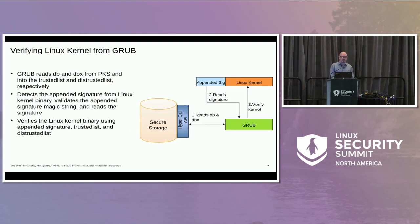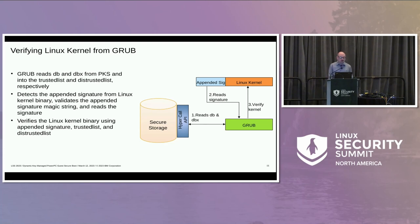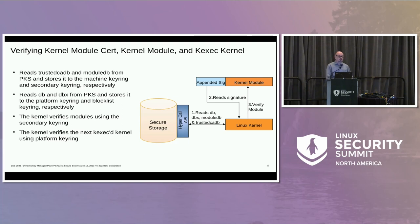Grub reads the DB and DBX from PKS into trusted list and distrusted list respectively, detects the appended signature from the Linux kernel image, validates the appended signature magic string, reads the signature, and verifies it using the distrusted list and trusted list. The kernel reads trusted CADB and module DB from PKS and puts them into the machine keyring and secondary keyring respectively. It also reads DB and DBX and stores them in the platform keyring and the blacklist keyring. The kernel then verifies modules using the secondary keyring, and can also verify the next kexec kernel.